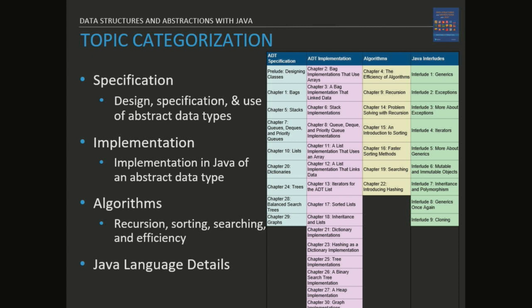We have scaffolding for the chapters in the order we'd like to see: basic data structures — design, implement, design, implement — then a little more language or algorithms to get to the next level, design, implement, and so on through the textbook. The structure alternates between design and implementation chapters with Java interludes inserted whenever needed.